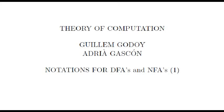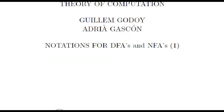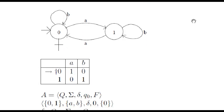In this video we'll go over some notations that are used for representing deterministic and non-deterministic finite automata. We'll start with this example of a deterministic finite automaton. This notation uses a graph drawing with nodes for states and labeled edges for transitions between states.